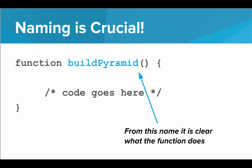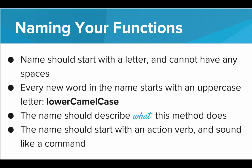For example, here's a function called buildPyramid. Naming is crucial when we're writing functions — we need to choose names that give a proper description to the function. From this name, buildPyramid, it's very clear what this function does: it builds a pyramid. General rules for naming your functions: the name should start with a letter and cannot have any spaces. Every new word in the name should start with an uppercase letter — this is called lower camel case. The first letter of the first word is lowercase, but every time you start a new word, you uppercase it, making it very easy to read.